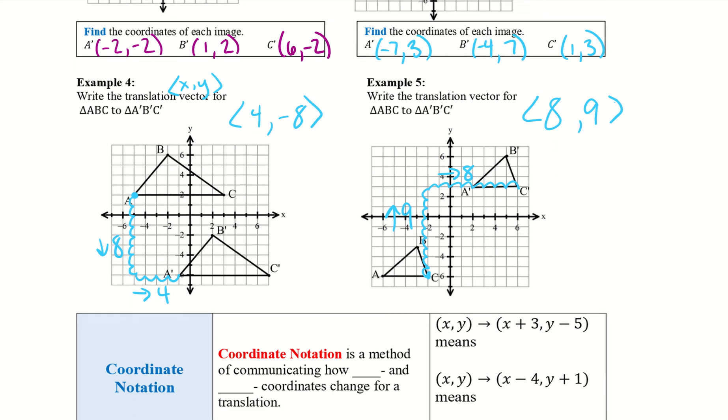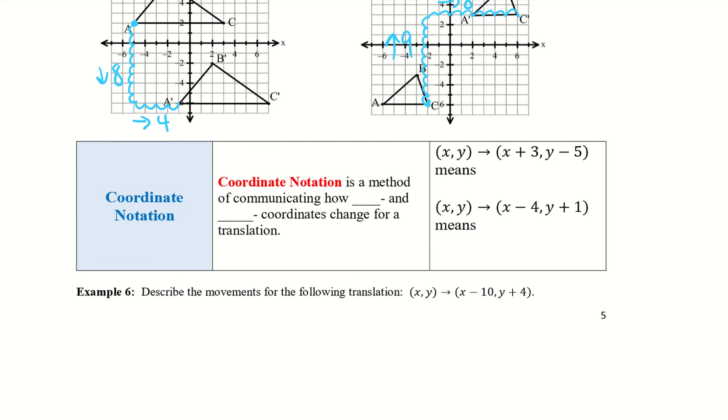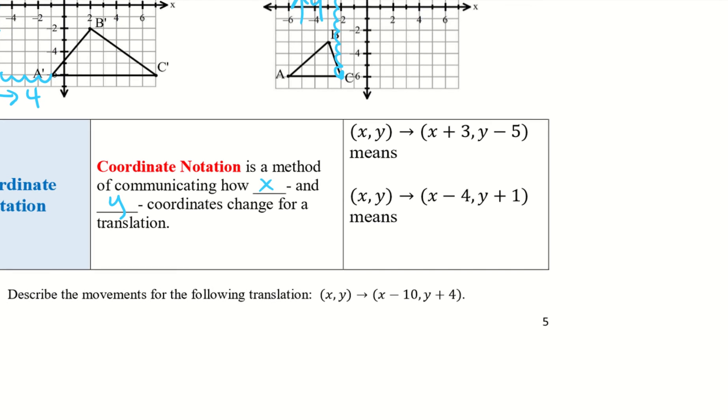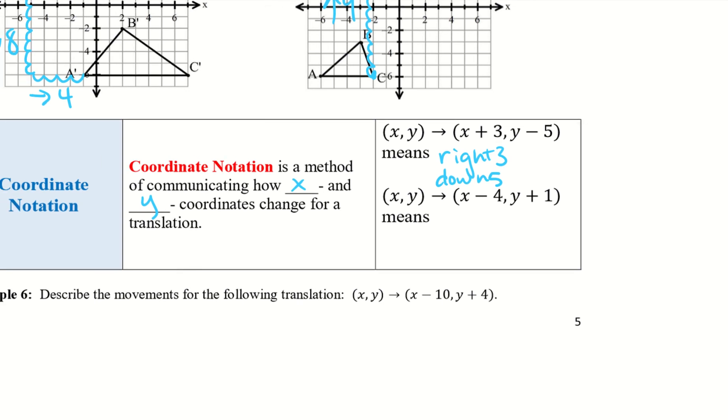Alright, let's take a look at coordinate notation. So coordinate notation is a method of communicating how X and Y coordinates change for a translation. So X, Y to X plus 3, Y minus 5 means that we move right 3 and down 5. So very similar with our vectors. It's just written a different way. So these are two different ways to show a translation, either with the coordinate notation or with a vector.